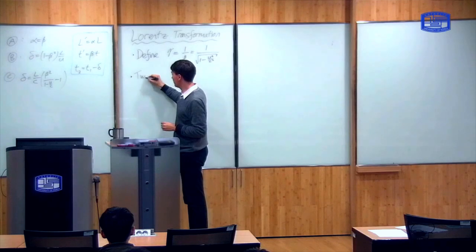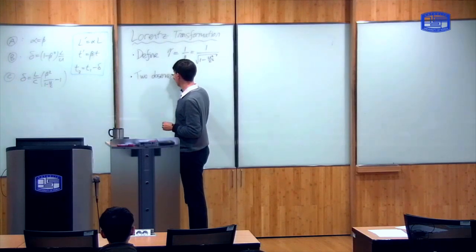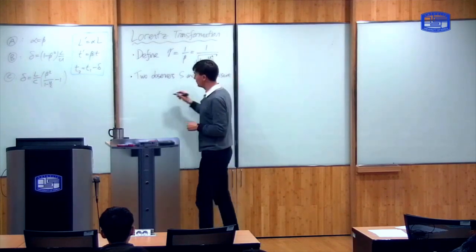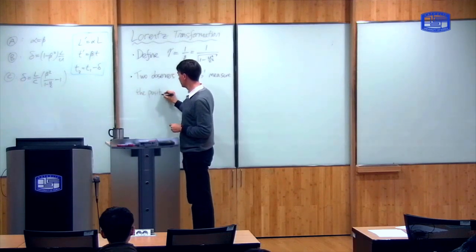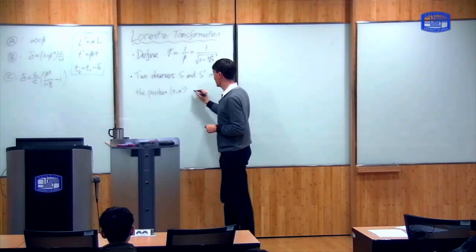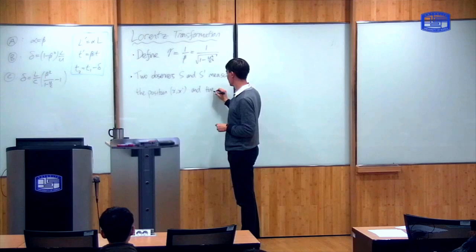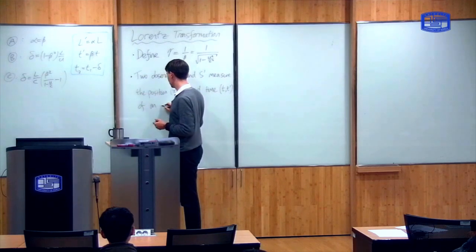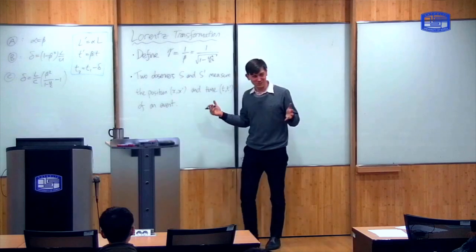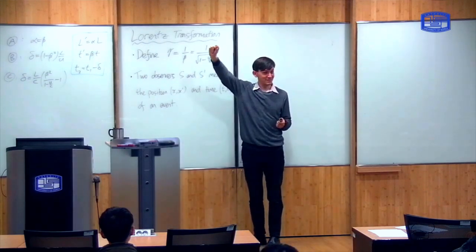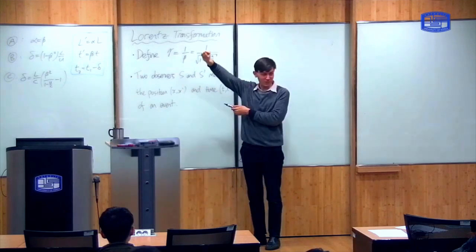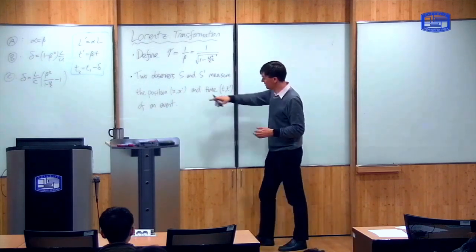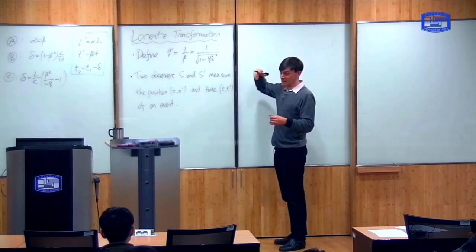We're going to do a kind of thought experiment. Two observers, S and S prime, measure the position — x or x prime — and time — t or t prime — of an event. An event is just a general term: something happens somewhere in space, and two different observers measure the position and time at which it happens. Both observers need to have a ruler and a clock.